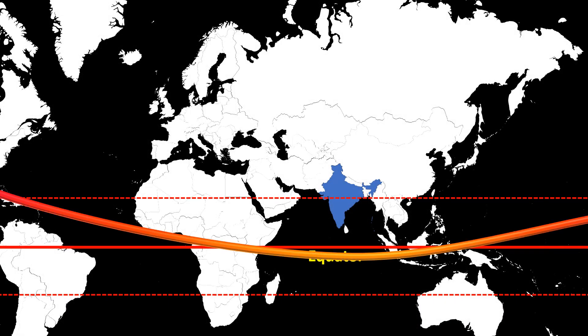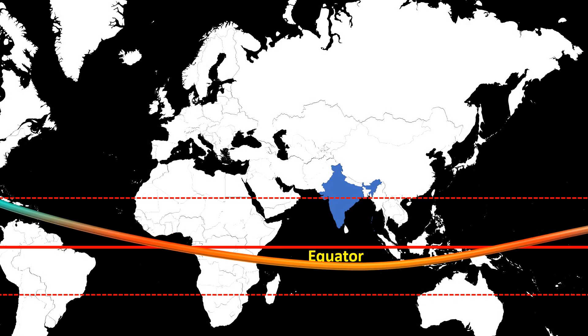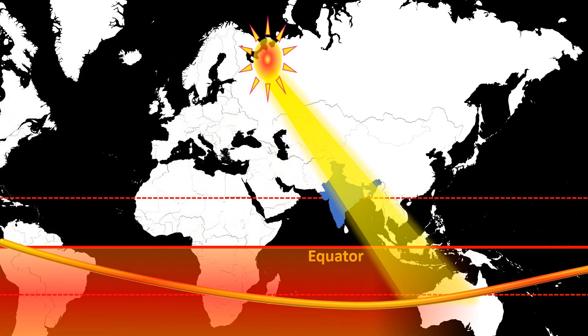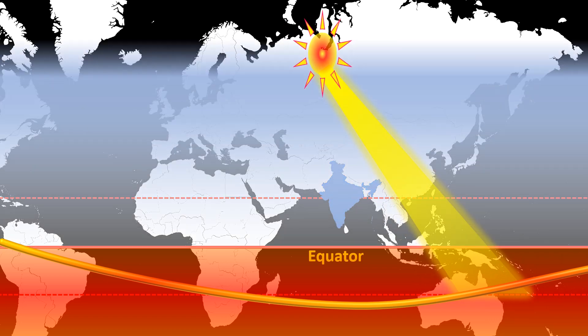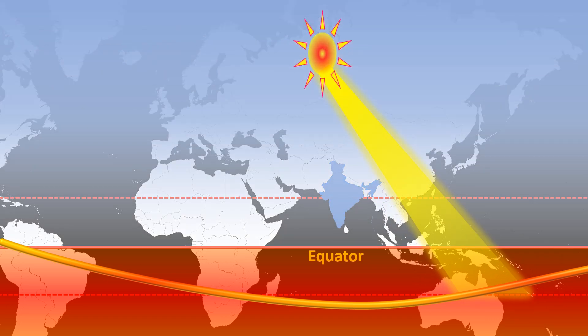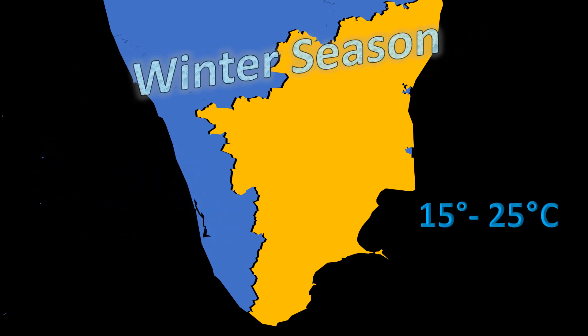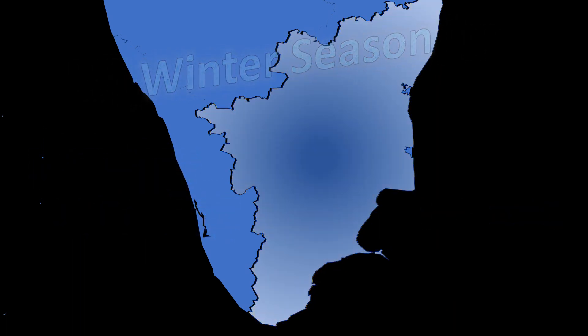At a certain time of the year, the sun's rays fall below the equator. And so, the southern hemisphere is hot, whereas the northern hemisphere experiences cooler climate. As a result, during the months of January and February, it is winter in Tamil Nadu.